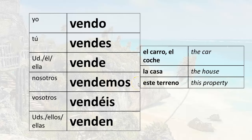We sell the car or we are selling the car: vendemos el carro, vendemos el coche. We sell the house: vendemos la casa. We sell this property: vendemos este terreno. You sell the car — remember this is the plural informal you used in Spain: vendéis el carro, vendéis el coche. You sell the house: vendéis la casa. You sell this property: vendéis este terreno.